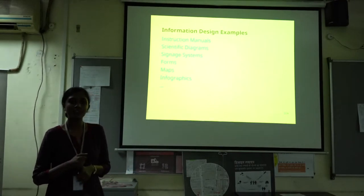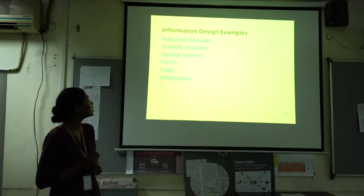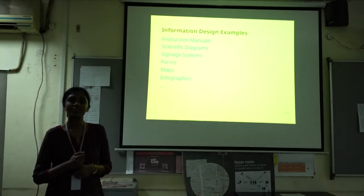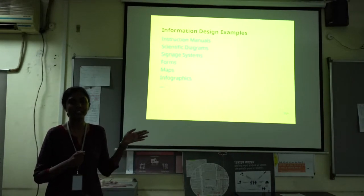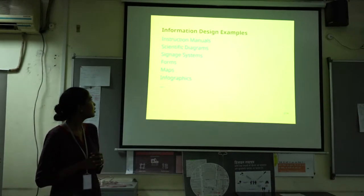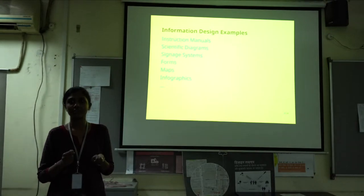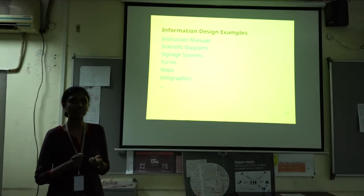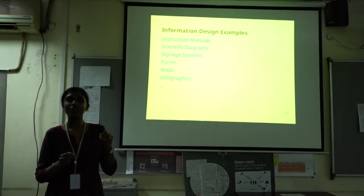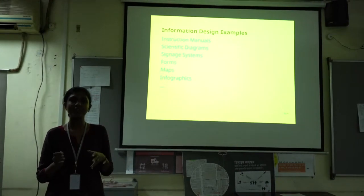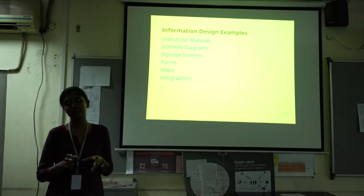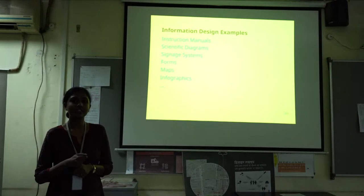Scientific diagrams in books are a form of information design. Signage systems are a very important form — everything in airports is a good system of signage with several different levels of communicating things. Forms — like bank forms or forms you fill out for any kind of application — are asking you for a lot of information that has to be put together on one page and conveyed as simply as possible, so they are again an important information design example.